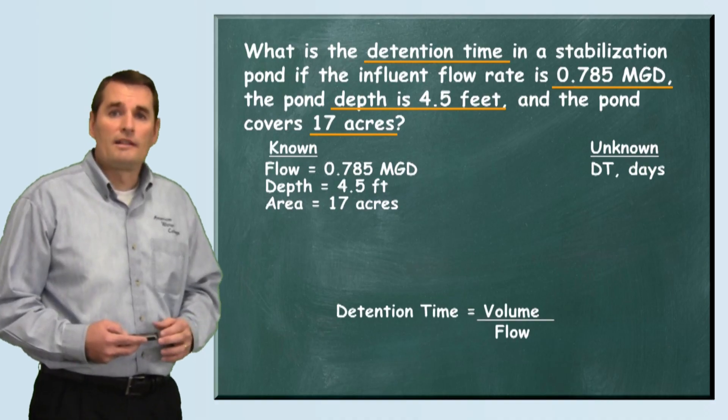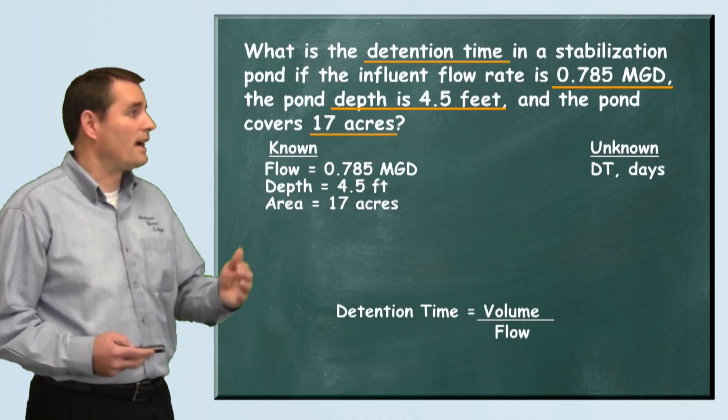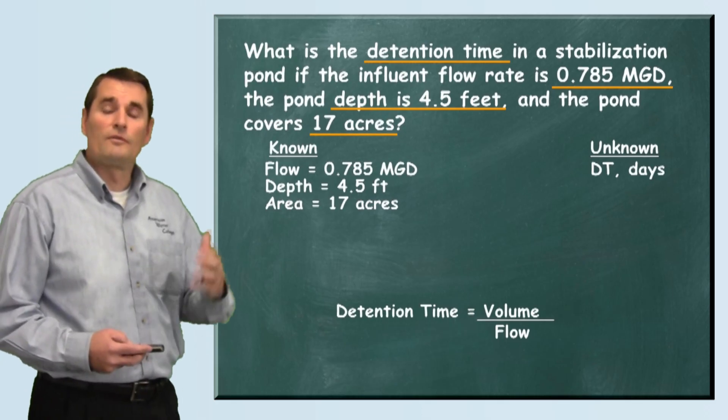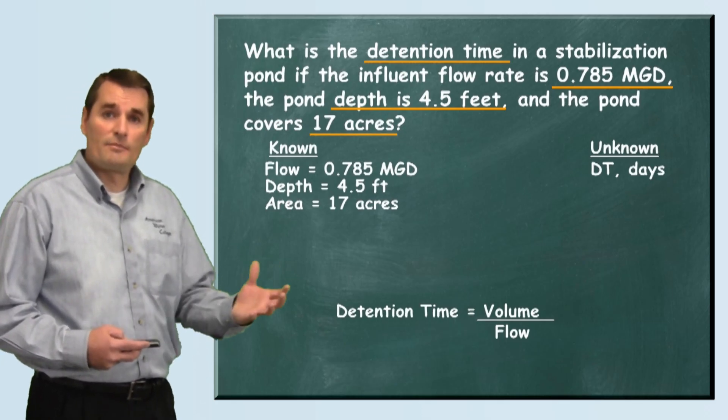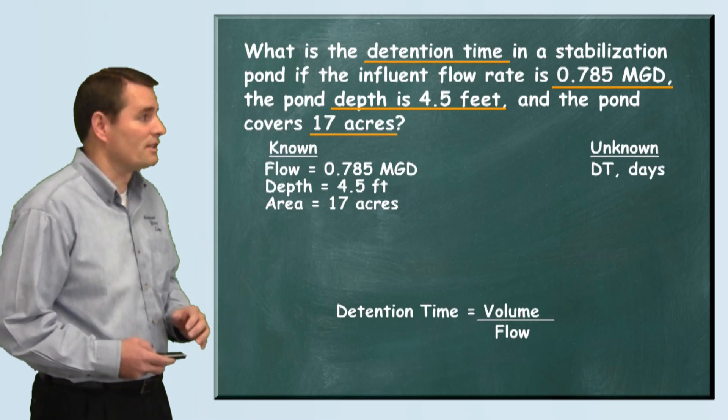Our detention time formula is basically detention time equals the volume divided by the flow. So if we can calculate the volume of this pond and divide that by the flow rate going into the pond, we'll have our detention time.